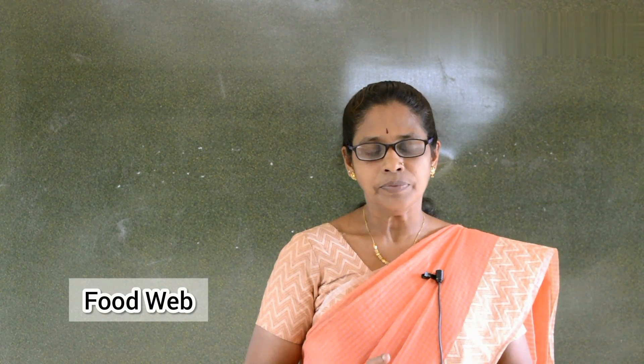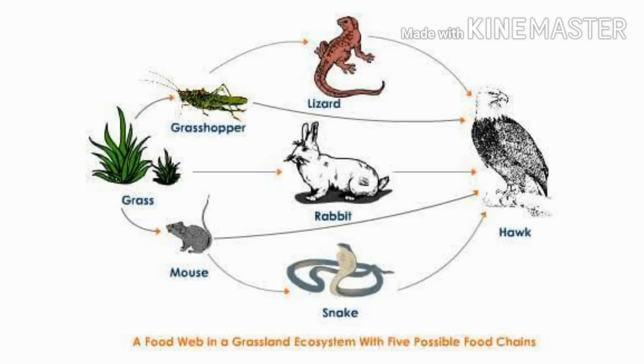The food chains are interconnected and interrelated in natural conditions, and this network is called a food web. Food web helps in maintaining the stability of the ecosystem. The larger the number of alternative pathways occurring in the food web, the more stable the ecosystem.